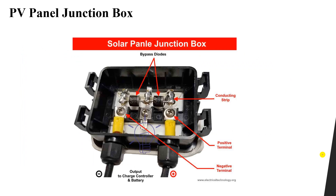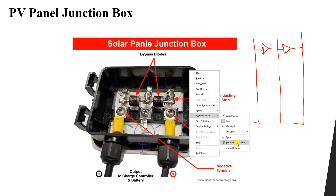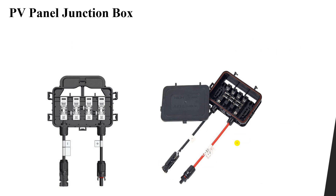Some junction boxes have only two diodes, meaning the panel is divided into two strings or two lines. In that case, we have one diode over one group of cells and another diode over another group, giving us finally a positive terminal and a negative terminal which go to the charge controller and the battery.